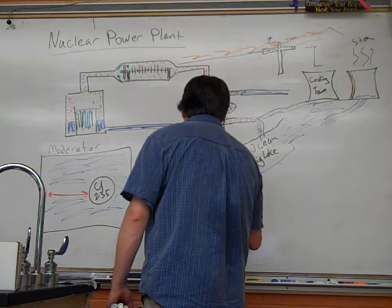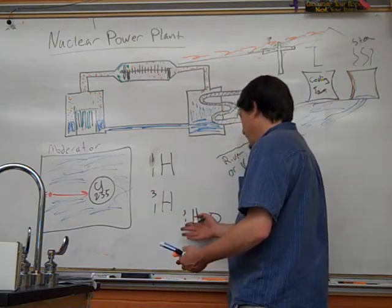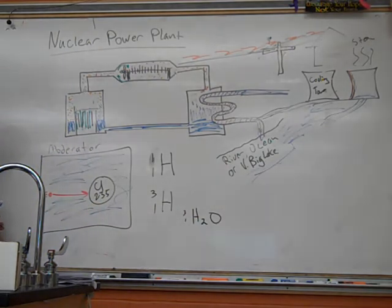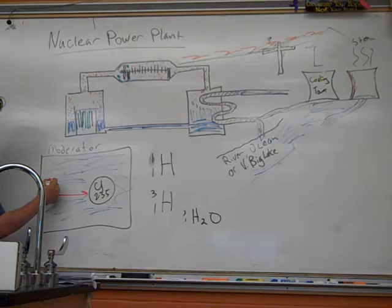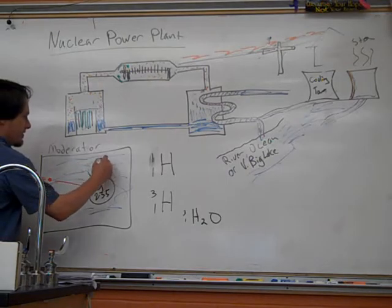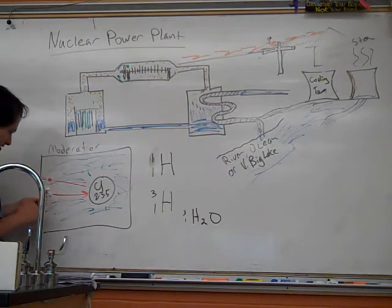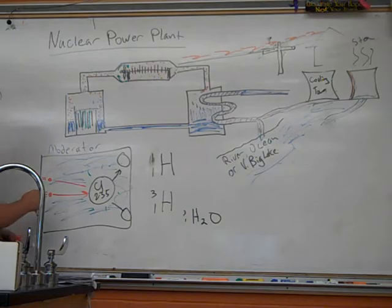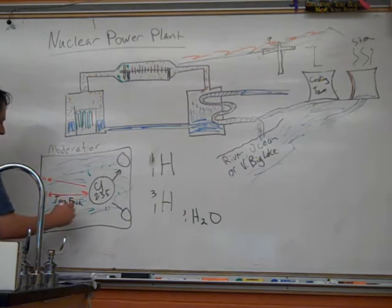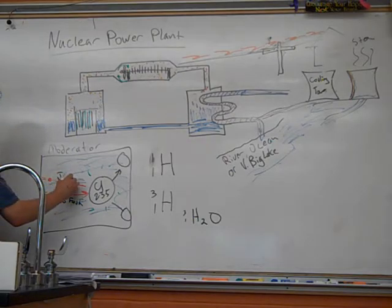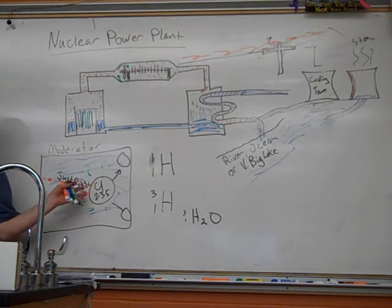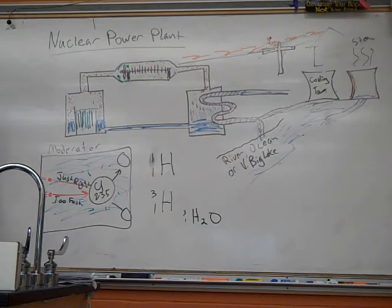And if you make water with that, this is called tritiated water. And tritiated water will slow the neutron down just enough to put it at the right speed to cause the fission reaction to take place and to cause the atom to split into lighter elements. And so too fast without the moderator, just right with the moderator.